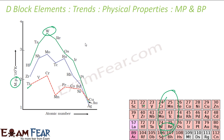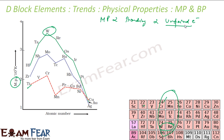The melting point depends on bonding, and bonding depends on unpaired electrons. Paired electrons don't take part in bonding because they are stable and don't want to participate. So the elements with more unpaired d electrons have stronger metallic bonds and higher melting points.